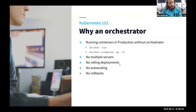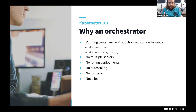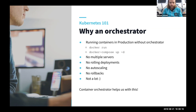No rollbacks either — if you deploy something wrong, how can you go back? So basically, you can use Docker run and Docker Compose, but you really want to use an orchestrator because an orchestrator helps us with many of these things and makes it much easier to run containers in production.